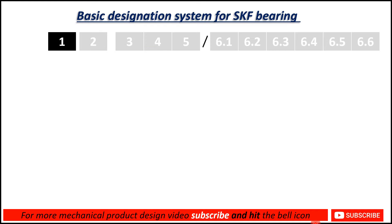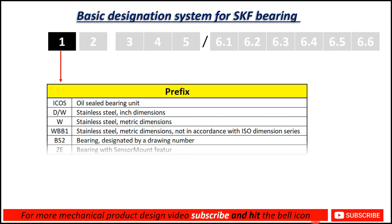In the prefix section, you can see these types of codes are used, like ICOS, D/W, and W. This is related to bearing units, oil seal bearing units, and stainless steel inch dimensions. This type of prefix you can see on SKF bearings.